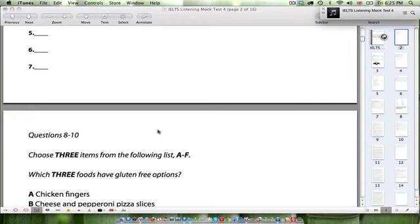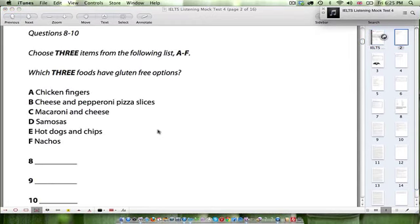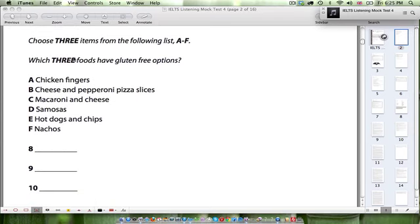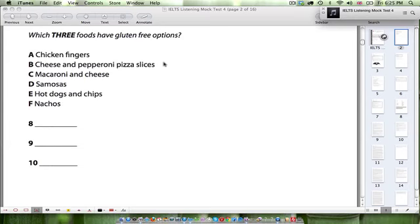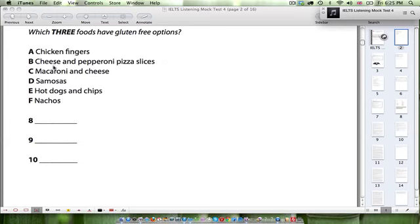Okay, so let's continue with the listening. You have some time to look at questions 8 to 10. Okay, only three questions. This should be fairly easy. Choose three items from the list. Which three foods have gluten-free options? Again, these foods will likely be stated exactly as they're written here in the listening. So chicken fingers, cheese and pepperoni pizza, macaroni and cheese, samosas, hot dogs and chips, nachos. Key here is gluten-free.